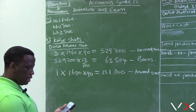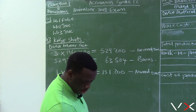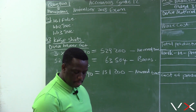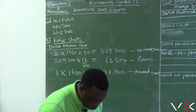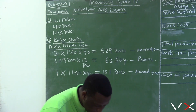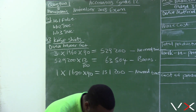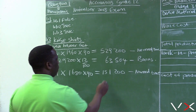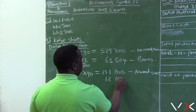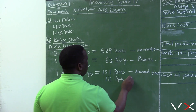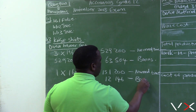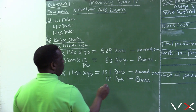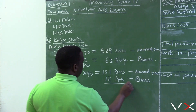This worker received a reduced bonus of 12,146. That is the bonus for this one worker.